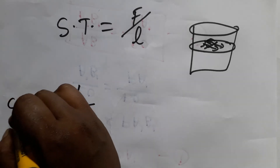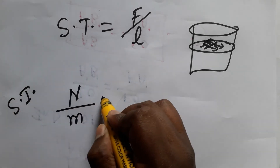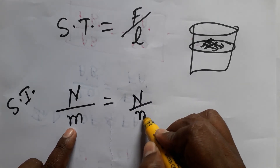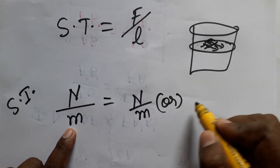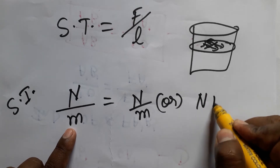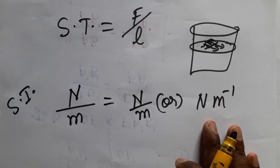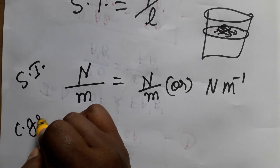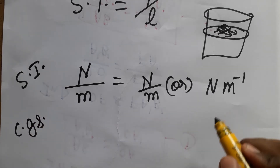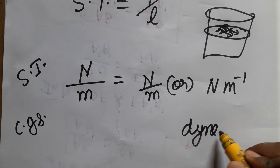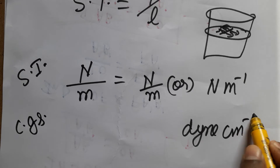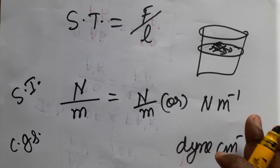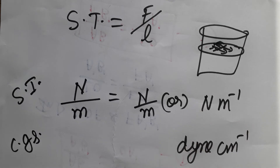So the SI unit of surface tension is newton per meter, or we can write it as newton meter inverse. In the CGS system, the same unit becomes dyne centimeter inverse, where newton is replaced by dyne and meter is replaced by centimeter.